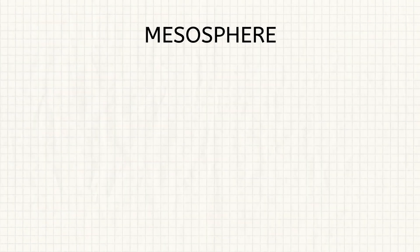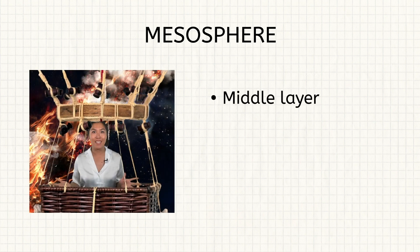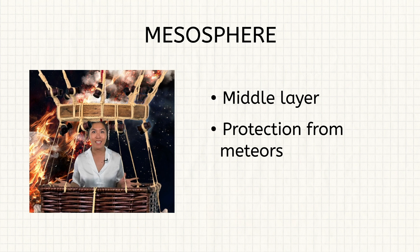After the stratosphere, we passed through the mesosphere. Meso means middle, and this is the middle layer. This layer gives us protection from meteors. They look pretty all the way up here, but I'm glad they don't get any closer to the Earth's surface.